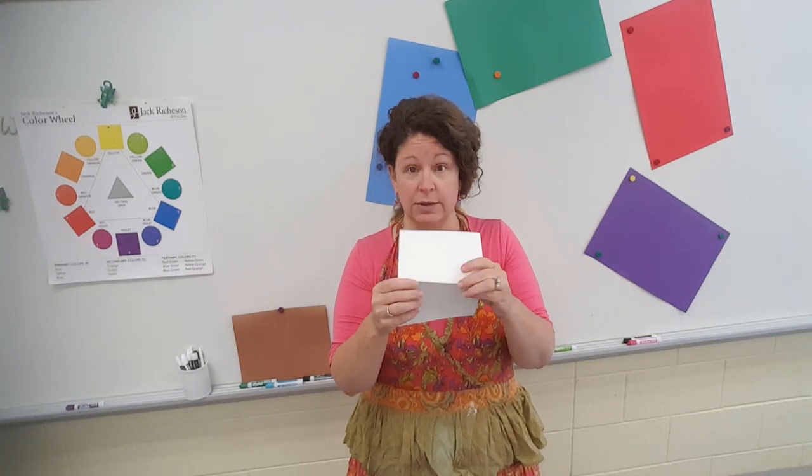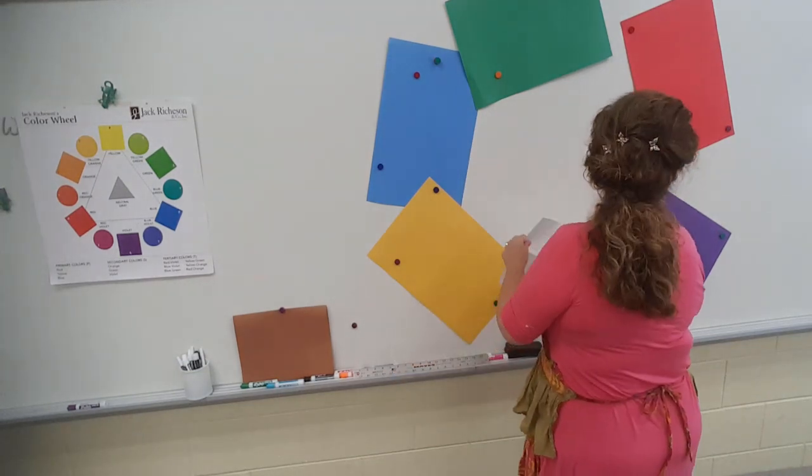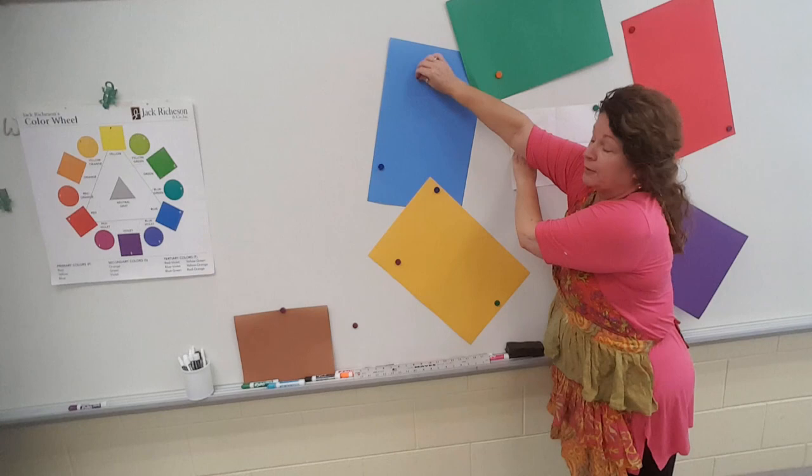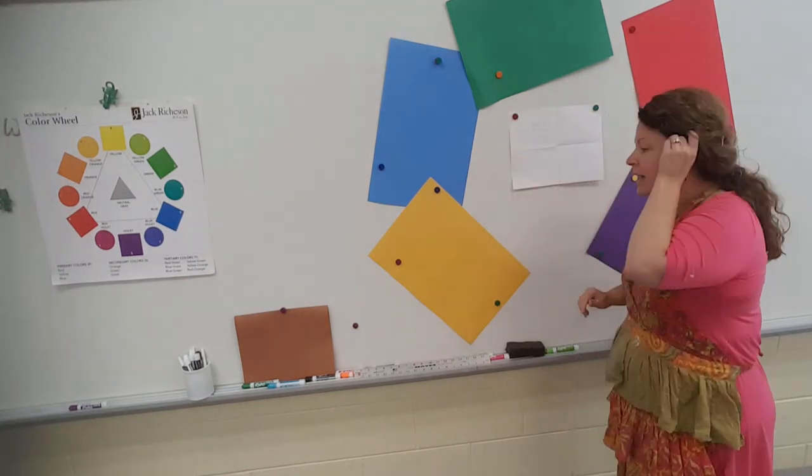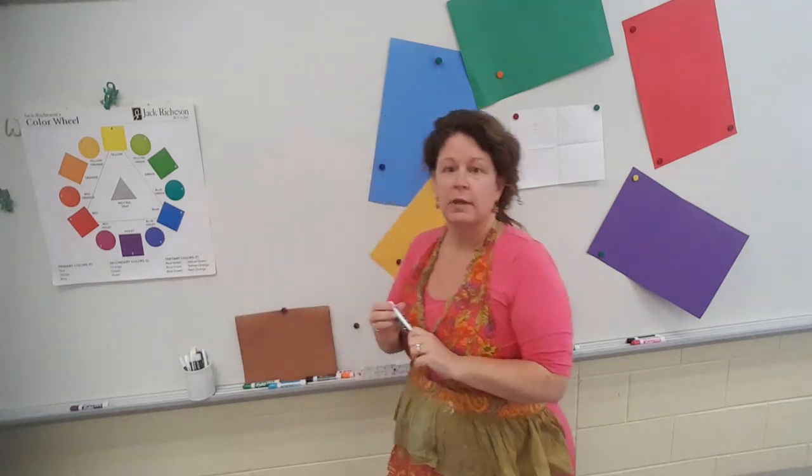Yay! Now we should have 4 parts to our paper. Once you have 4 parts to your paper, what you're going to do next is you're going to get a nice black marker and you're going to do your crazy lines in it.